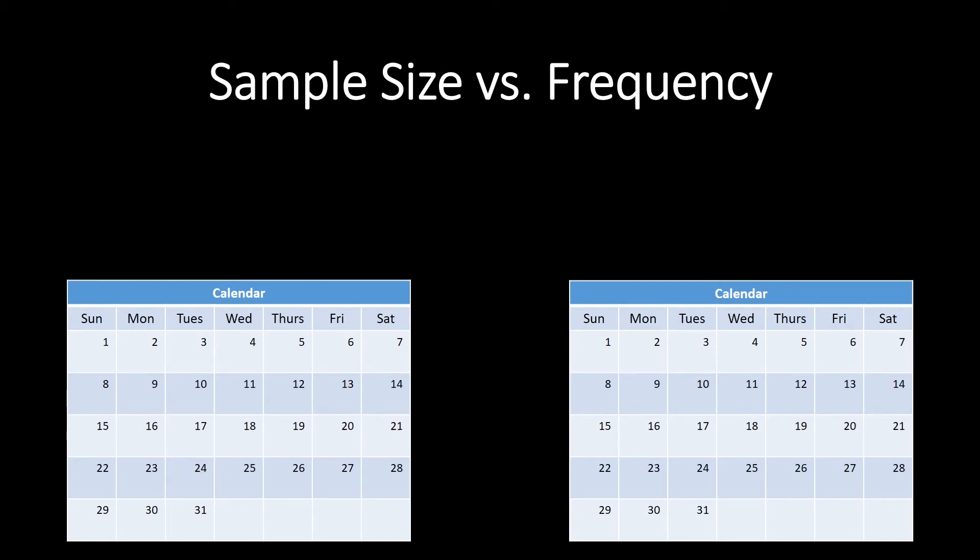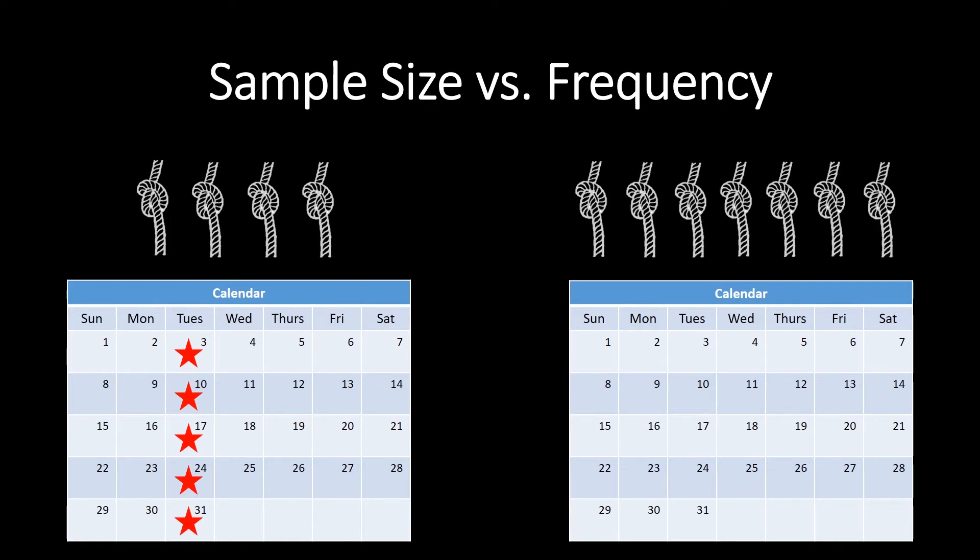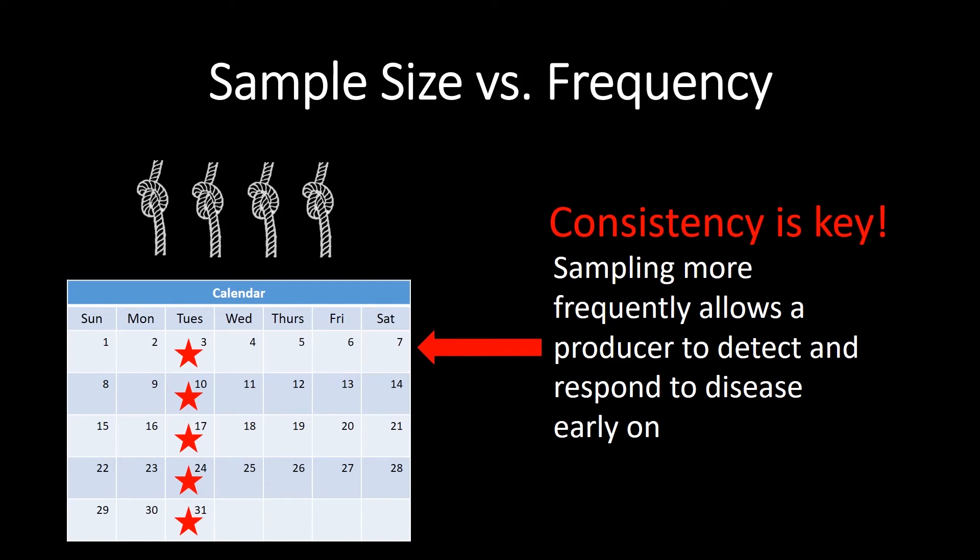Software to calculate the recommended number of oral fluid samples to collect will soon be available. Meanwhile, we know it is better to collect fewer samples frequently than to collect many samples infrequently. Consistency is key, and sampling more frequently allows a producer to detect infection within a herd early and respond more effectively.